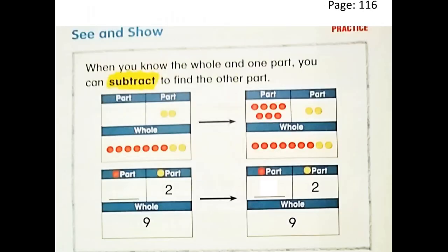Let's see the next page in your book, page number 116. Let's see this interesting example. How many balls do we have here in all? Grade 1, let's count them: 1, 2, 3, 4, 5, 6, 7, 8, and 9. We have 9 circles in all. And we know the second part — how many yellow circles do we have in this part, grade 1? 1 and 2. Excellent — in this part we have only 2 yellow circles.